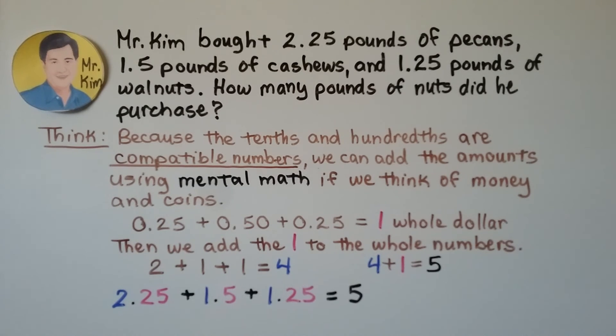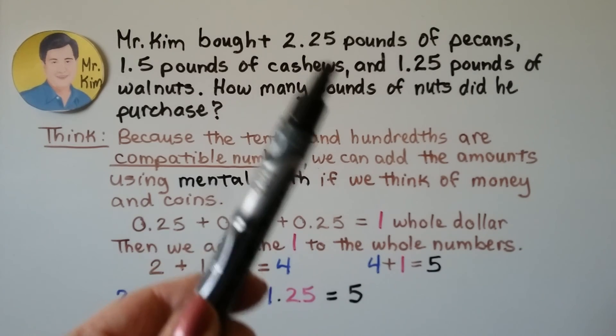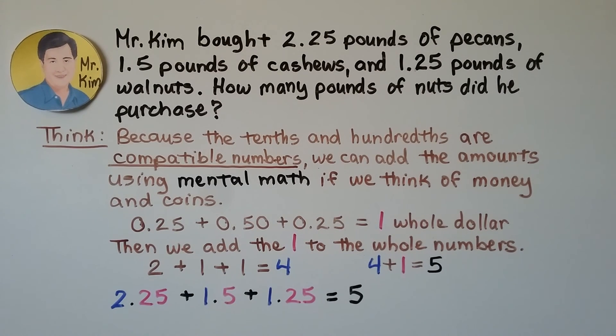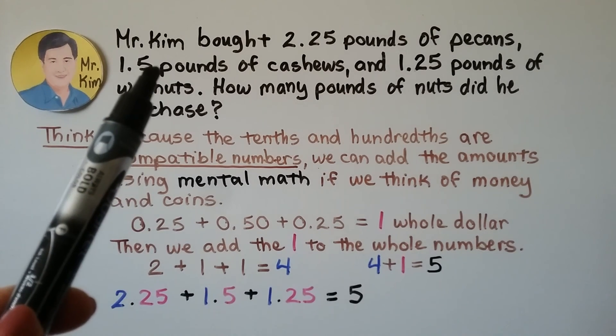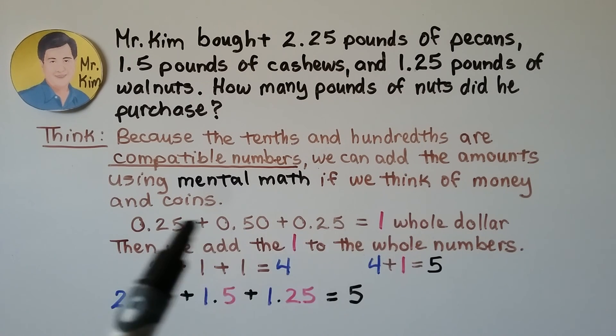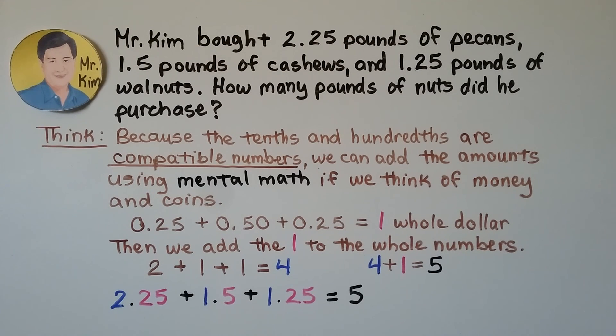Now we think, because the tenths and hundredths are compatible numbers. We have 25 hundredths, 25 hundredths, and 5 tenths. We can add the amounts using mental math if we think of money and coins. We think of this as 25 cents, this as 50 cents (because we could add a trailing zero), and this as another 25 cents. This would be one whole dollar. That would be one whole.